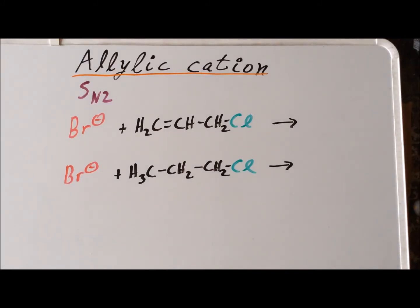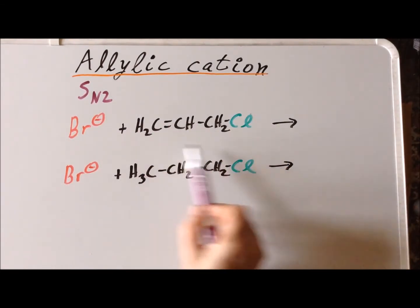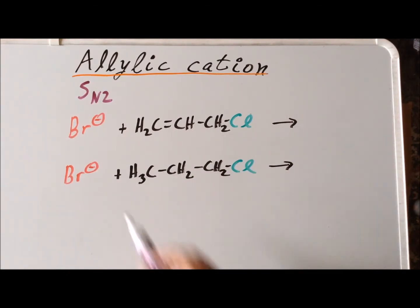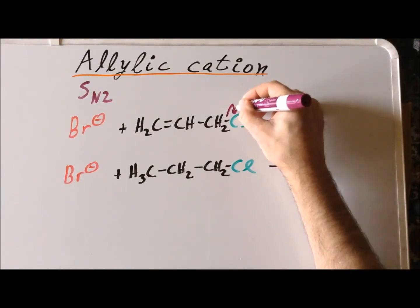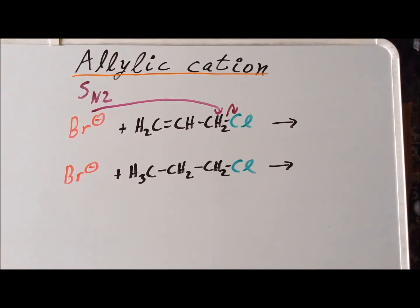For the remainder of the video, we want to see how the allylic structure affects SN2 reactions. Recall that for SN1, the primary determinant of how fast the reaction takes place is the ease of formation of a carbocation. For SN2, the relevant parameter is steric hindrance. So we compare two reactions: in the first, we have allyl chloride, and in the second we have 1-chloropropane. In each case we have an SN2 reaction. The nucleophile is going to be bromide ion, and the leaving group is going to be chloride. So in each case, chlorine leaves with its electrons and is replaced by bromide.